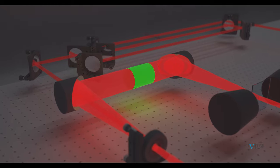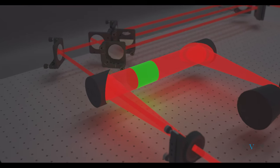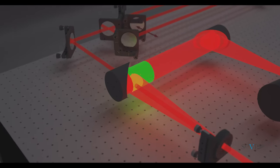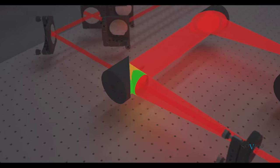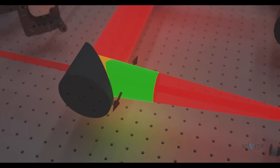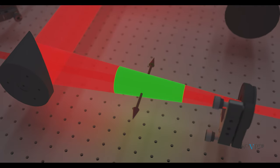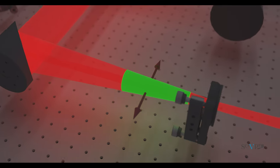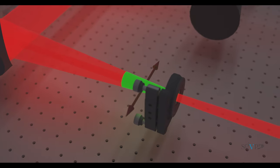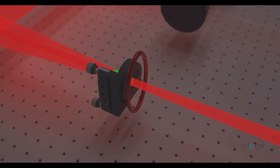For both transmission and emission measurements, the output terahertz signal lasts several picoseconds. Because standard optical detectors do not have picosecond resolution, a type of pump-probe detection technique is used to measure the output signal with sub-picosecond resolution.